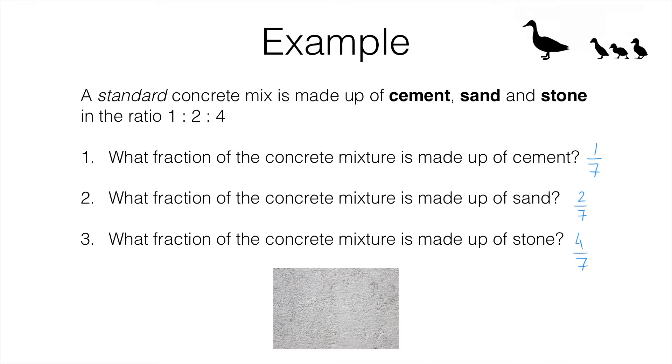As a quick check, we can see that these three fractions add up to one whole. One seventh plus two sevenths plus four sevenths makes seven sevenths or one whole. And that makes sense because there are only three ingredients in the concrete, so these three fractions must add up to one whole.